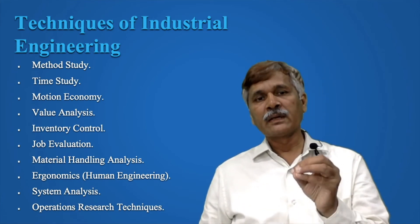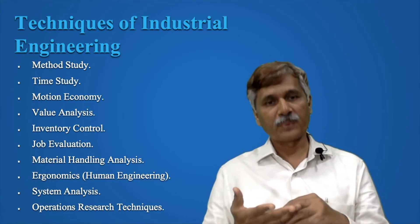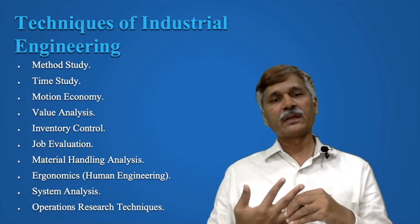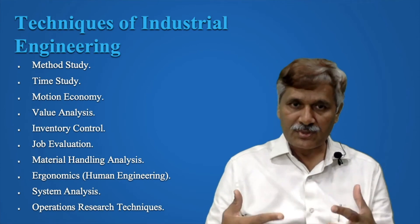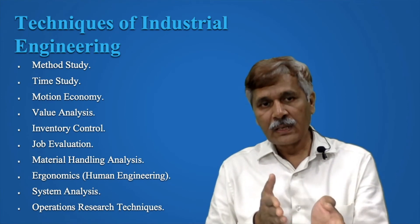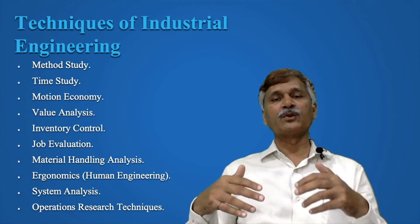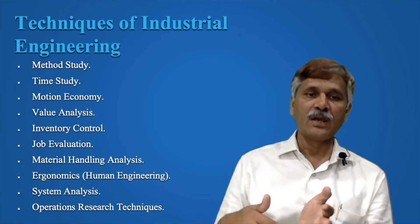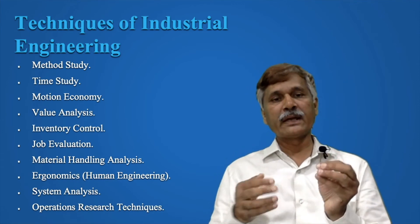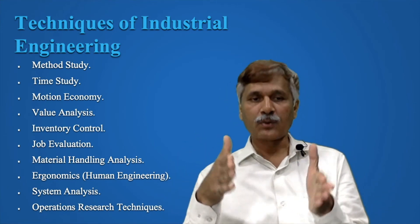Broadly, in inventory control you determine what is the total amount of material required, what is the finished goods inventory, what is the in-process inventory, how much material is required and when it should be procured. You must ensure that material is not unavailable — causing workers to sit idle — nor that excess material ties up capital. In job evaluation, you evaluate the job to know which components are to be redesigned or combined so that cost is reduced.